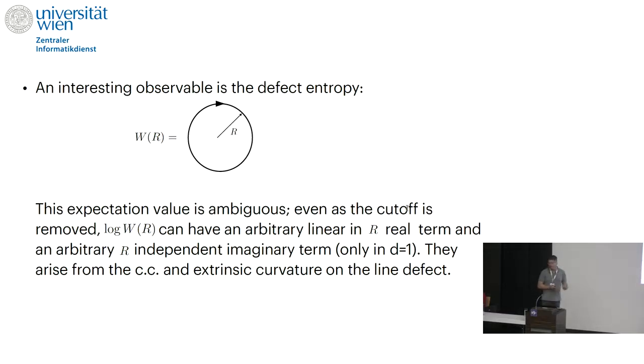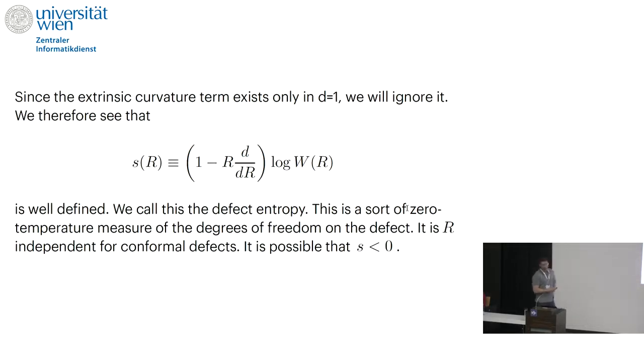You can ask whether this expectation value is actually scheme independent. The logarithm of this expectation value may have slight ambiguities—these are linear in the radius of the circle. There is also an imaginary ambiguity, which is independent of the radius, but only in one dimension. These are associated to counterterms on the line defect. To get rid of this linear dependence on R, one defines a slightly more complicated observable where you act with this differential operator, one minus R dR, on the logarithm of the expectation value. Now this is completely scheme independent above one plus one dimensions.